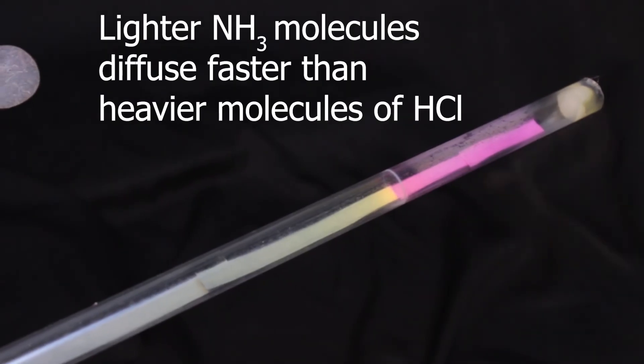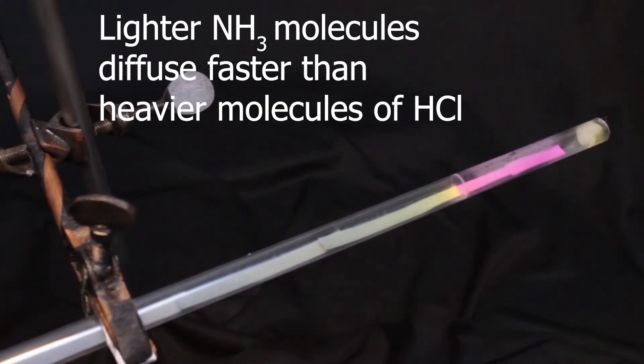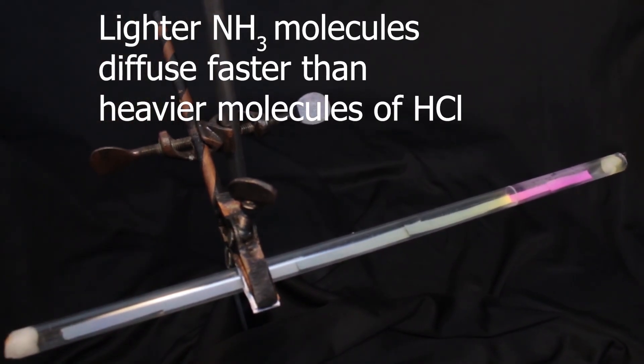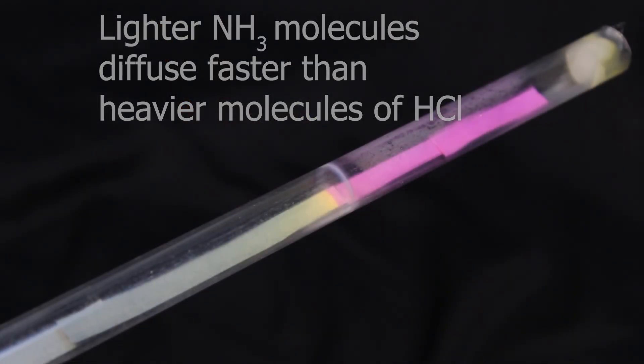You can see that the formation of this white ring took place very much to the right. It means that ammonia has traveled during diffusion a much bigger distance during the same time, compared to hydrogen chloride, which confirms our idea that lighter molecules diffuse faster.